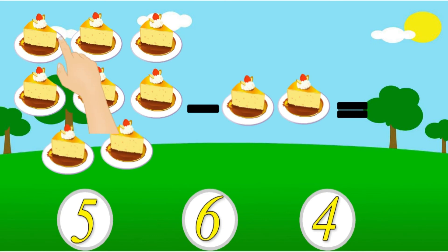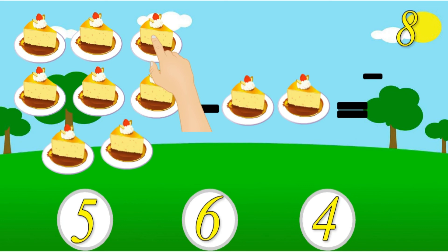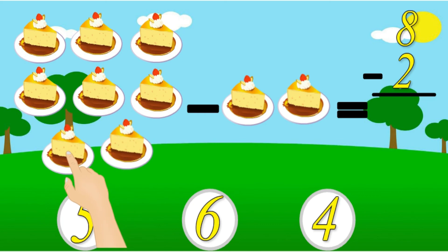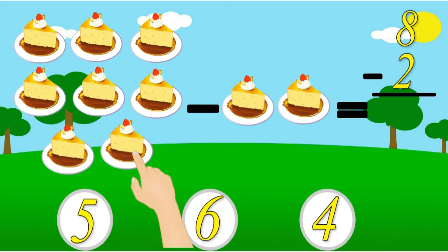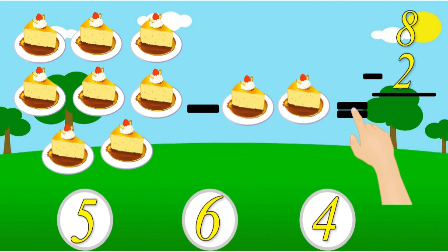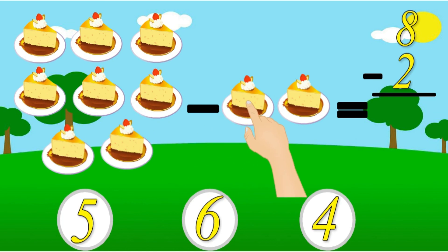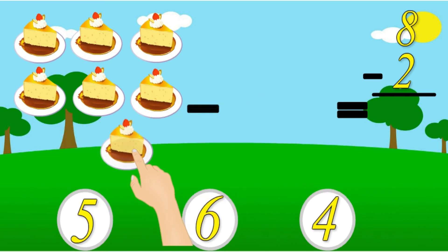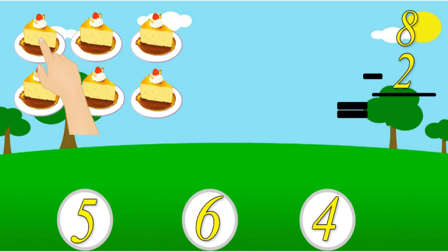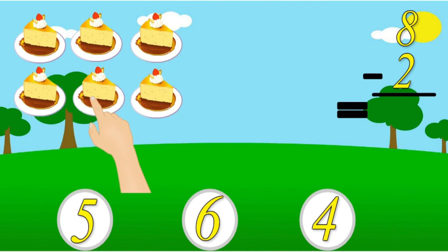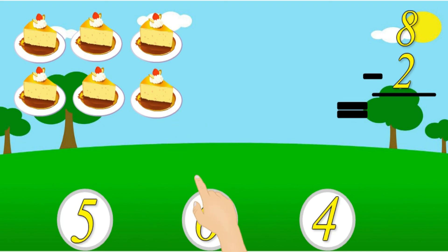1, 2, 3, 4, 5, 6, 7, 8. There are 8 pastries minus 1, minus 2, equal. Now let's solve: 8 pastries minus 1, minus 2. Count together: 1, 2, 3, 4, 5, 6. There are only 6 pastries left. The right answer is 6.